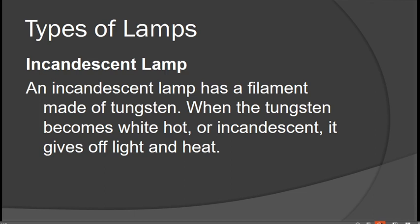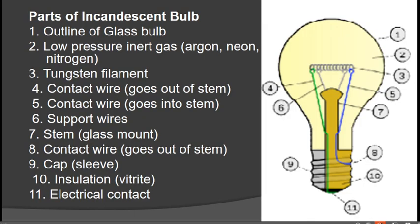The incandescent lamp has a filament made of tungsten. When the tungsten becomes white hot, it gives off light and heat. It is the very first type of lamp invented. If we consider who patented the incandescent lamp, we would say it is Thomas Alba Edison, though there are some contradictions about whether he was truly the first inventor — but that is a topic of history. Here we focus on the technicalities of the types of lamp.